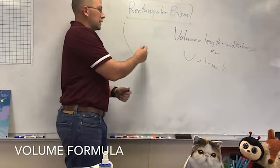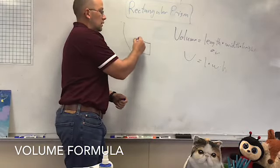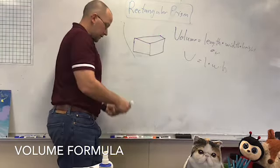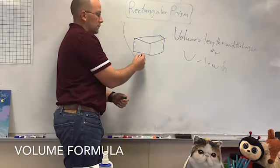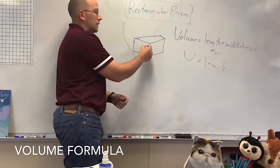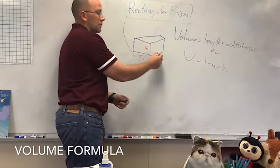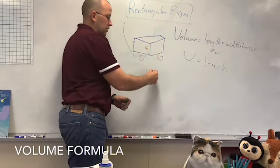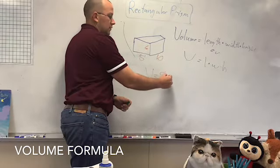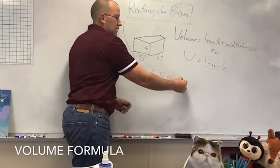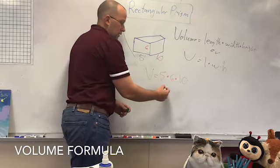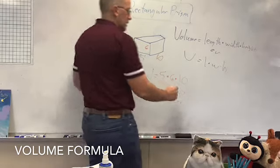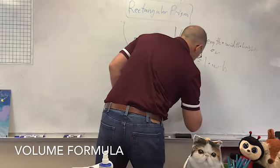So if I have a rectangular prism and my length is 5, my width is 6, and my height is 10 — volume equals 5 times 6 times 10. That gives me 30 times 10, which is 300. And I'm going to call this units cubed.